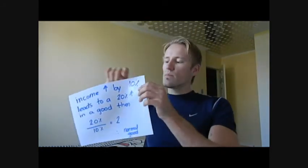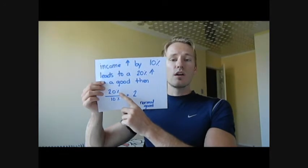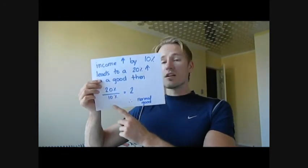As your income increases, the quantity demanded for a good changes. The formula is: the percentage change in quantity demanded divided by the percentage change in income. When dealing with normal goods, the higher one's income, the greater the quantity demanded — therefore normal goods have positive income elasticities. In turn, inferior goods have negative income elasticities, because the higher the income, the lower the quantity demanded for that inferior good.